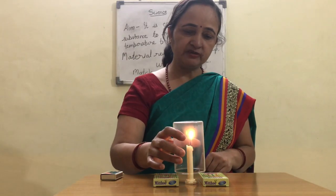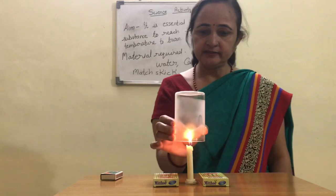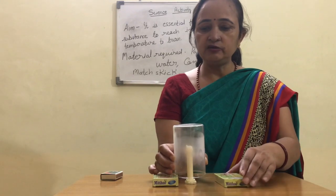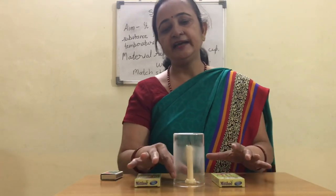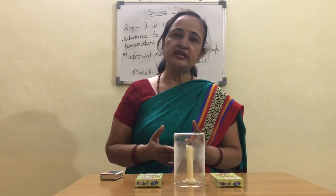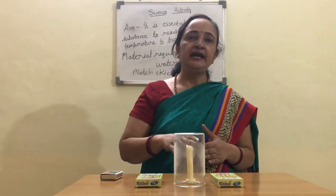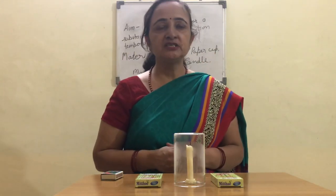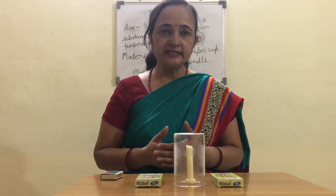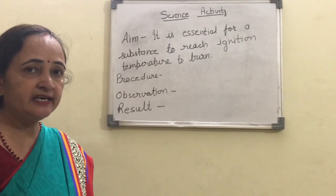In the first few seconds it burns, and now you can see it has started flickering. Can you see the flickering? Then it extinguishes — it is no longer getting a sufficient supply of oxygen. In the beginning, when it was getting sufficient oxygen it was burning, but when I brought the glass over it and the oxygen supply was cut off, it extinguished. This activity shows that air is necessary for combustion.